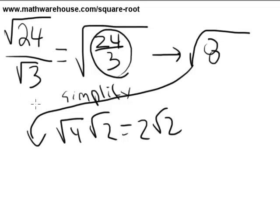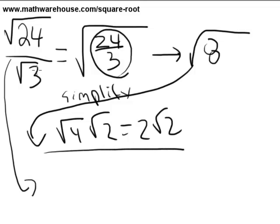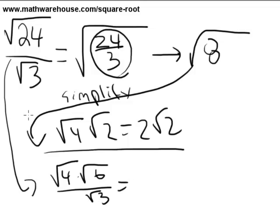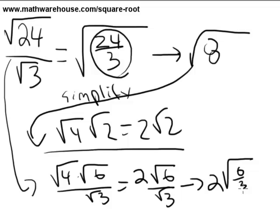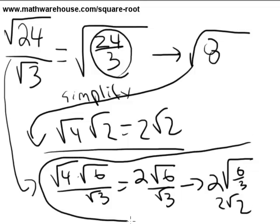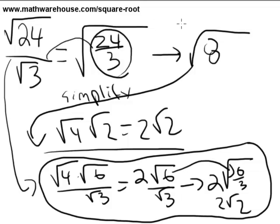As you can see, if we tried to simplify the top and bottom separately, it wouldn't work out as cleanly. You could rewrite the square root of 24 as the square root of 4 times the square root of 6 over the square root of 3, getting 2 times the square root of 6 over 3, or 2 root 2 — the same answer. But I don't recommend this approach; it often involves more steps and bigger numbers. The preferred method is to combine into one radical first, then simplify.